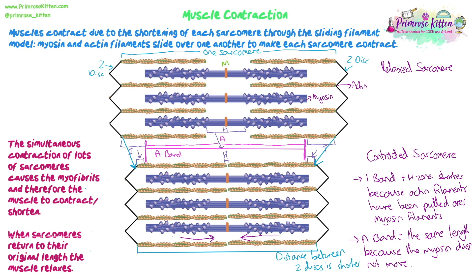This is an example of one sarcomere. A myofibril has many sarcomeres along its length, and there are many myofibrils together in the muscle fibre, and many muscle fibres in the muscle. If each section of the myofibril is one sarcomere and they are all contracting simultaneously — all getting shorter at the same time — then the whole myofibril becomes shorter, and if all myofibrils in all muscle fibres do this, the whole muscle contracts.